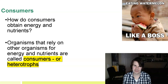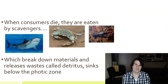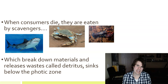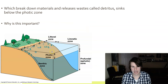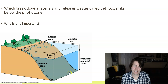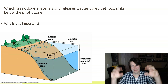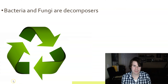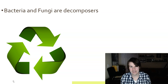We are heterotrophs — consumers. We have to eat something different than ourselves. 'Hetero' means different, 'troph' means nourishing. When consumers die, scavengers like sharks, crabs, lobsters, and bacteria break down material and enable it to return to the environment, releasing waste called detritus. It sinks below the photic zone. In marine systems, below the photic zone there is no light, so there are no phytoplankton. Organisms get nutrients deeper down through marine snow — scraps falling from the upper levels. Bacteria and fungi are decomposers that return those nutrients back into the system.